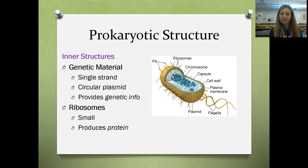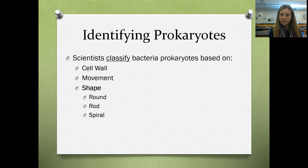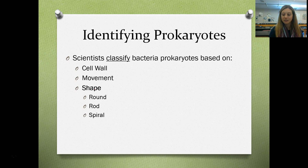Shape is really important in bacteria. Scientists classify bacteria based on three things: the cell wall they have — that's why they're archaebacteria or eubacteria — the way that they move, and their shape. There are three shapes of bacteria: round, rod, and spiral.